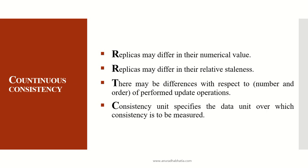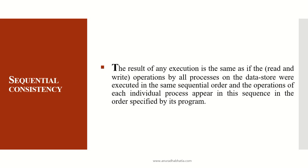A consistency unit specifies the data unit over which consistency is measured. Sequential consistency means the result of any execution is the same if the read and write operations by all processes on the data store were executed in the same sequential order, and operations of each individual process appear in the order specified by its program. Sequential consistency must be maintained across all replicas regardless of geographical location.